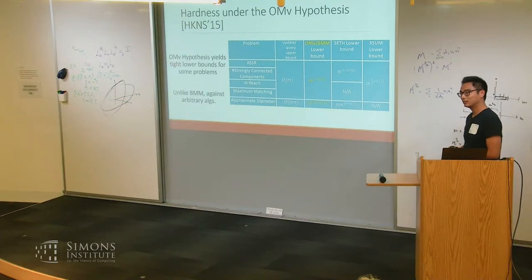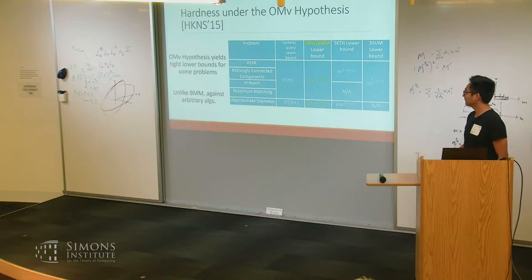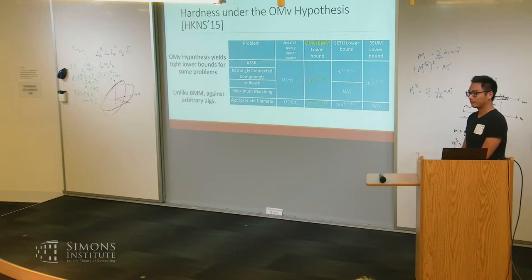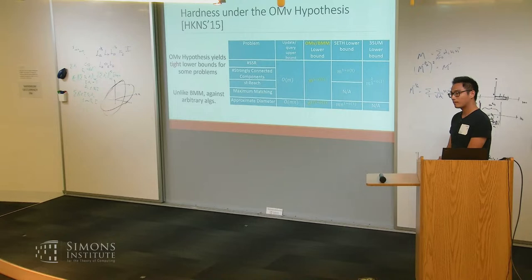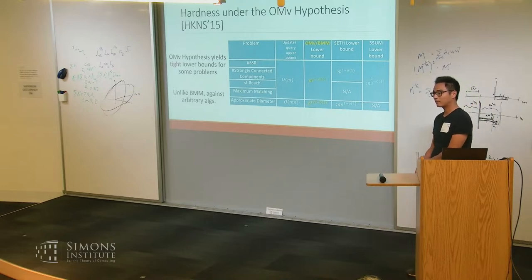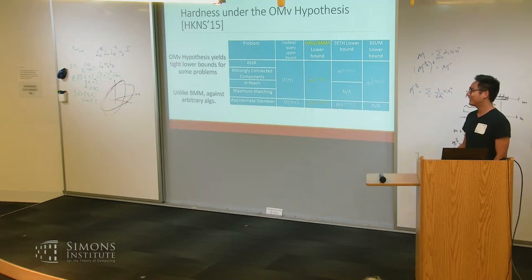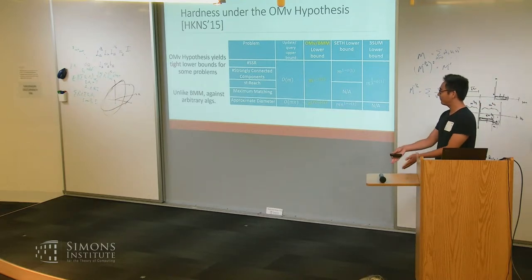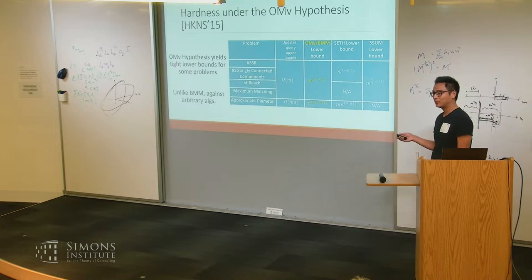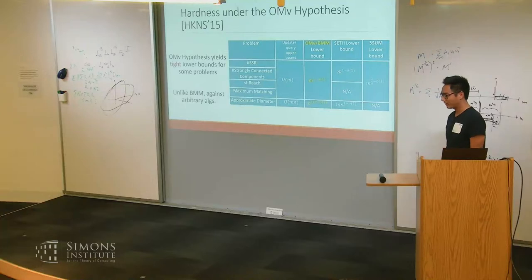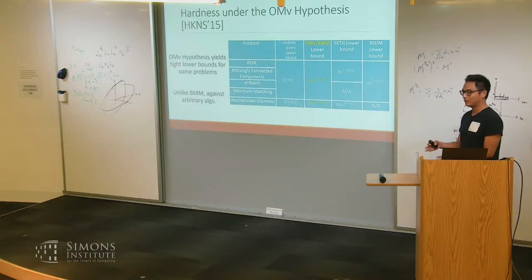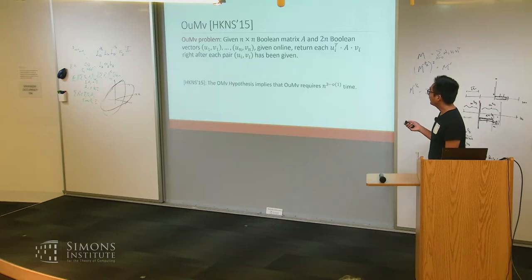It's also natural to show hardness of dynamic problems based on the hardness of some dynamic problem itself. The online matrix-vector multiplication (OMV) problem can be viewed as a dynamic version of BMM. Here we are given an n×n Boolean matrix A and n Boolean vectors V₁ to Vₙ in online order, and we need to return A·Vᵢ right after Vᵢ is given. The current best upper bound is n³/2^(Ω(√log n)), not quite polynomially faster than n³. The OMV hypothesis states this problem requires essentially n³ time. Unlike BMM, lower bounds under OMV work against arbitrary algorithms, not just combinatorial ones.